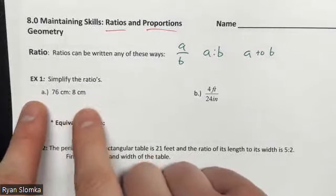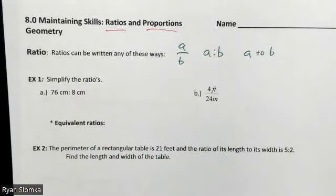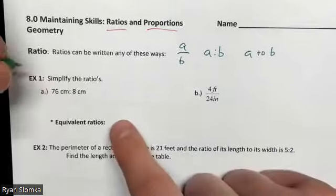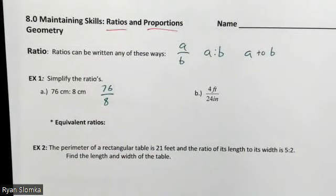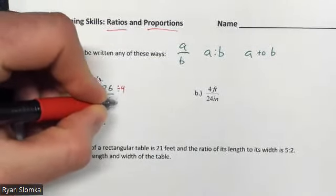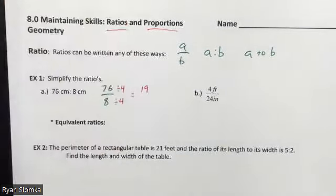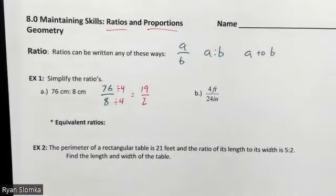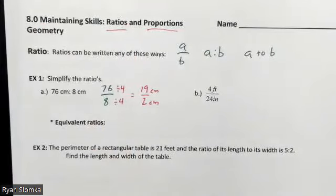Here's our first ratio — two lengths in centimeters. We need to simplify this ratio, which means finding a common factor and pulling it out. I like to rewrite it as a fraction first. A good common factor for 76 and 8 is 4. Dividing both by 4 gives us 76 ÷ 4 = 19 on top, and 8 ÷ 4 = 2 on the bottom. That's our reduced fraction: 19 over 2 centimeters.